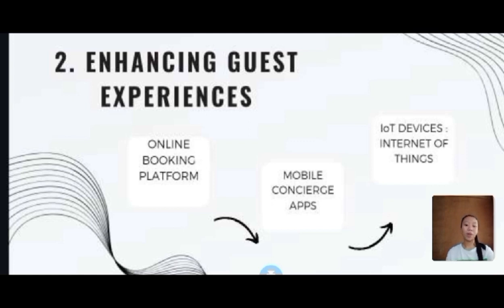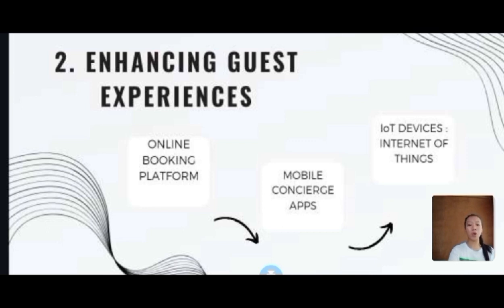First is online booking platforms: ensure that the booking platform is easy to navigate with clear information on room availability, rates, and amenities. Second is mobile concierge apps: this allows guests to customize their stay preferences, such as room temperature or pillow type, through the app. It also offers contactless check-in or check-out, and provides guests with local dining options, attractions, and transportation information for a seamless experience.